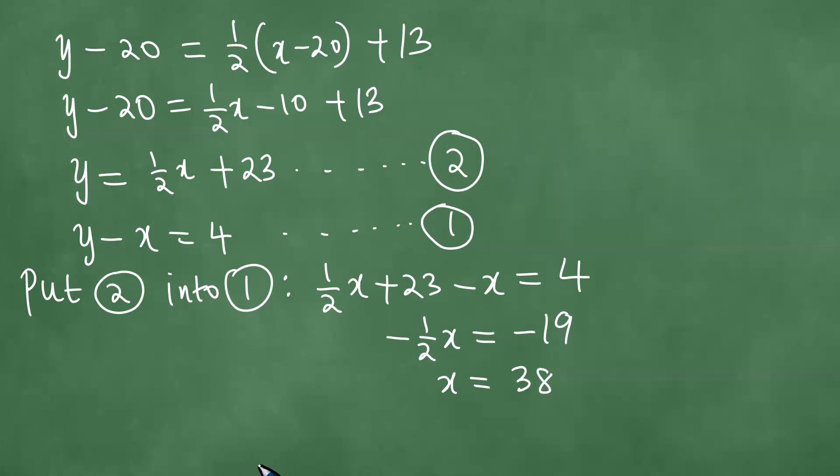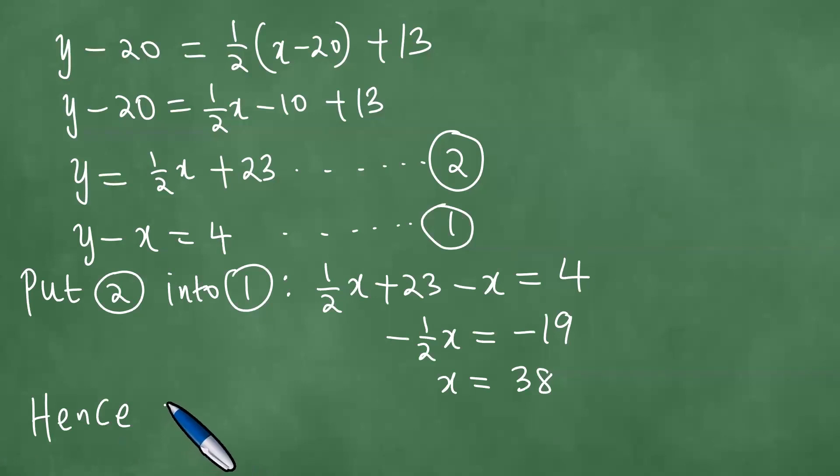After obtaining 38, we note that Y equals 1/2X + 23 from equation two, which is 1/2(38) + 23. Adding these gives us 42. So X = 38 and Y = 42.